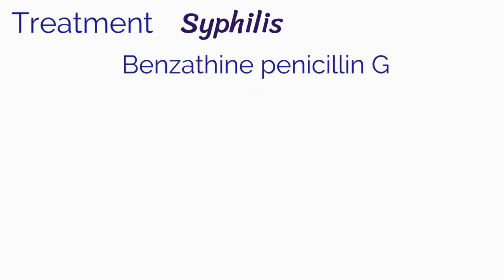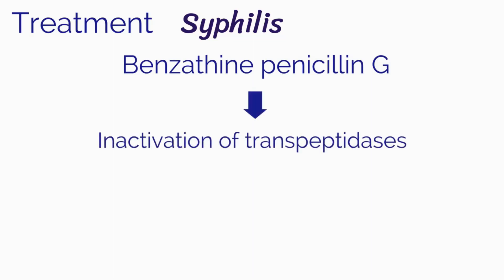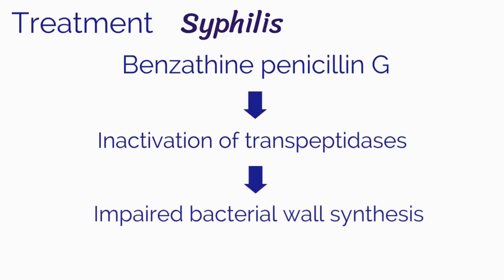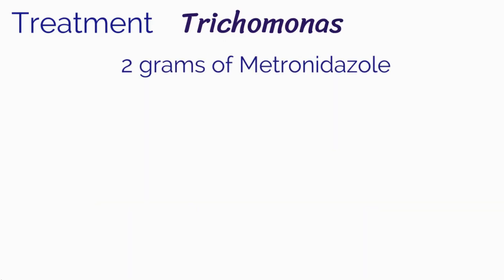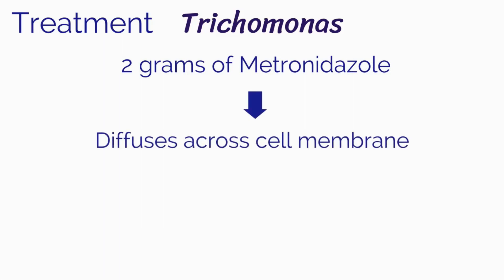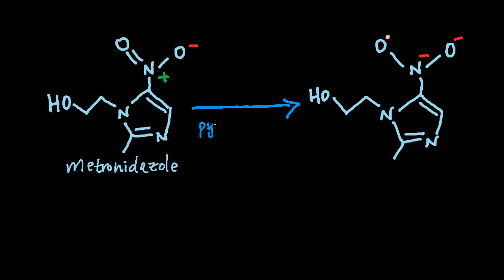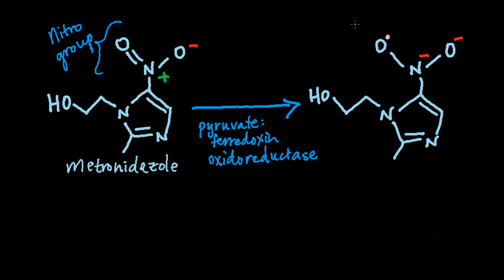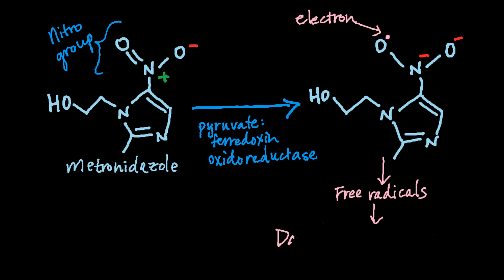Treatment for syphilis is with benzathine penicillin G, given intramuscularly. The mechanism of action for penicillin is similar to ceftriaxone, with inactivation of transpeptidases leading to impaired bacterial wall synthesis. Treatment for trichomonas is with a single dose of 2 g of metronidazole. Metronidazole diffuses across the cell membrane of trichomonas. After being taken in, an enzyme of the trichomonas reduces the nitro group of metronidazole, meaning it gains electrons. This promotes production of free radicals, causing damage to bacterial DNA, ultimately causing cell death.